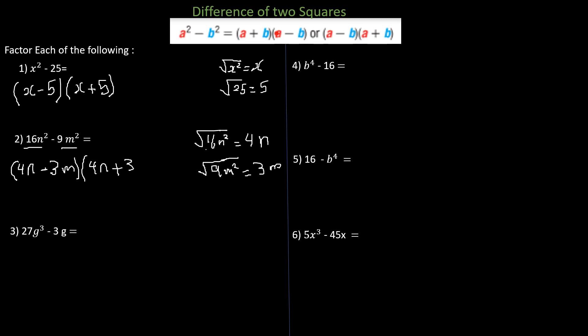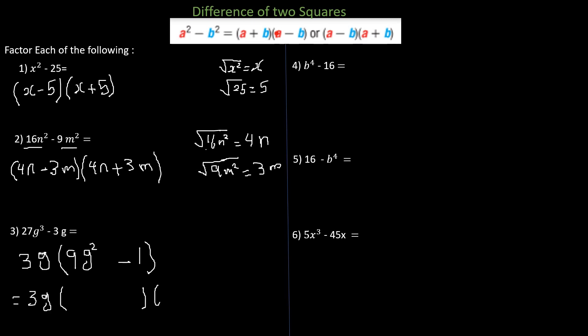In the third example we have to find the greatest common factor first. We have 27g cubed minus 3g. The GCF of 27 and 3 is 3, and the common variable factor is g. Dividing: 27g³ ÷ 3g equals 9g², and 3g ÷ 3g equals 1. So we rewrite as 3g times the quantity 9g squared minus 1. Now applying the difference of two squares: the square root of 9g squared is 3g and the positive square root of 1 is 1, giving us 3g times 3g plus 1 times 3g minus 1.